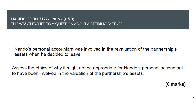The next part, question 15.3, was attached to the Nando question about a retiring partner. This one was on professional ethics. Nando's personal accountant was involved in the revaluation of the partnership's assets when he decided to leave, and we have to assess the ethics of why it might not be appropriate for Nando's personal accountant to have been involved in that valuation. If we don't know our professional ethics — objectivity, integrity, and so on — we really aren't going to be able to do a very good job of answering it. We could apply a common sense approach and probably get around two marks out of six by pointing out the potential conflict of interest. But it would also make sense to have all the partners' accountants involved to get a consensus.